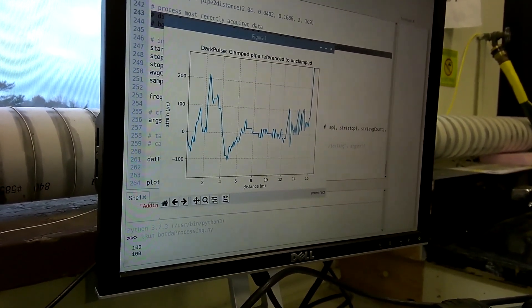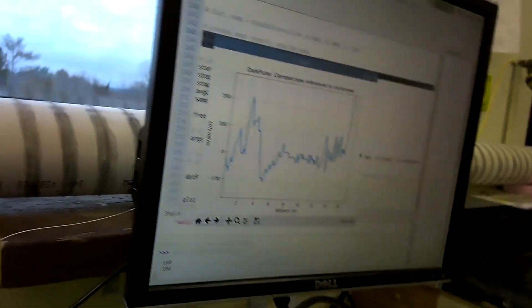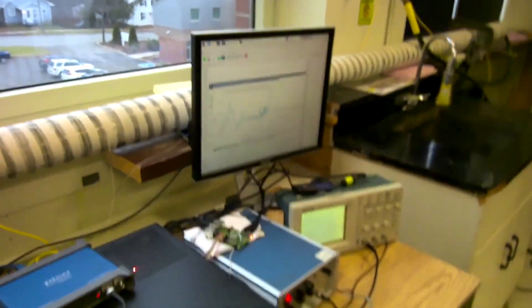Clamped versus unclamped. 10 PSI in the pipe, half meter resolution. That's not too bad.